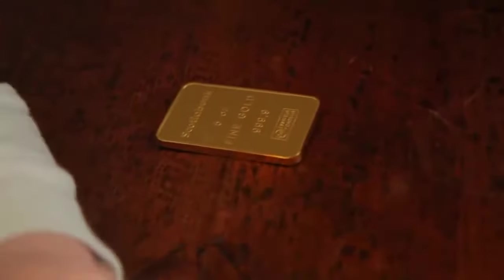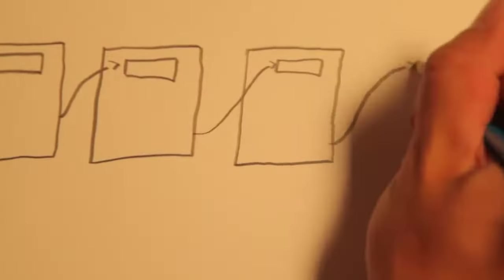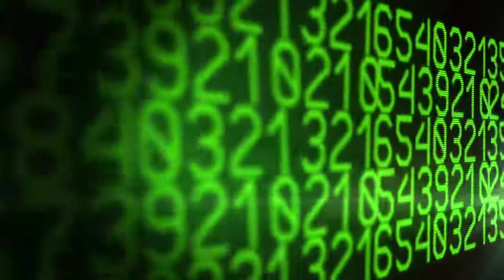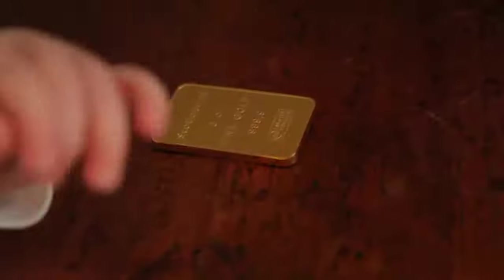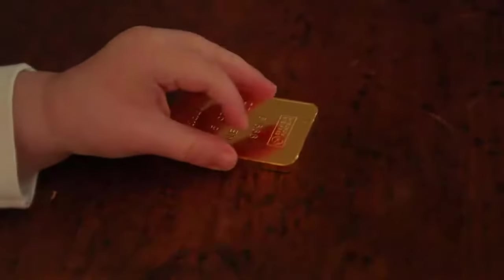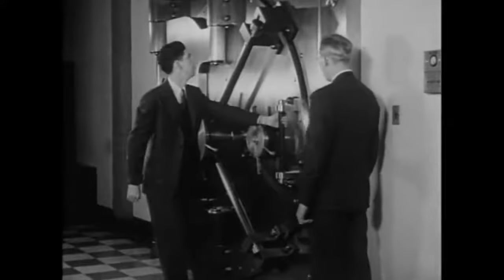But before getting to the method behind how Bitcoin works, the question most people get hung up on is, how can a number have value? Why would anyone in their right mind trade multiple ounces of gold for a number? Let's rewind for a moment and think about money. Money is how we move value across distance or through time.